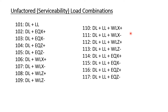You might be thinking that since we are designing using the limit state method, we always use factored load combinations. These unfactored load combinations are added because they will be used for calculating the size of the footing. The SBC provided by the geotechnical engineer already includes a high factor of safety of 3 to 5. Since a factor of safety is already included in the SBC of soil, we calculate the footing size based on unfactored load combinations.